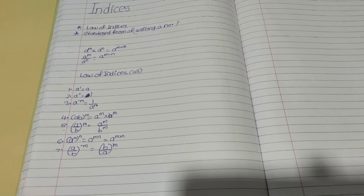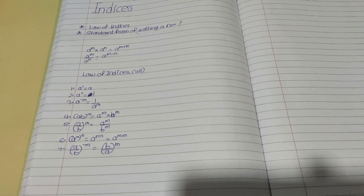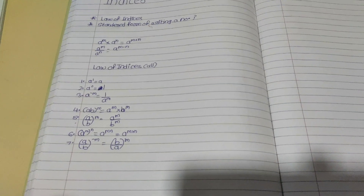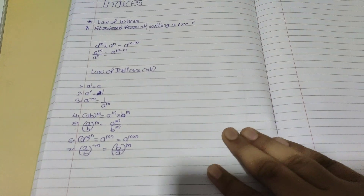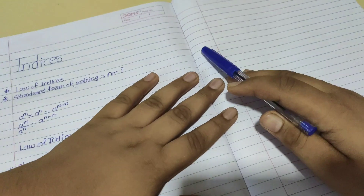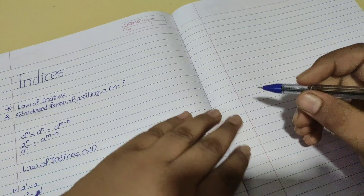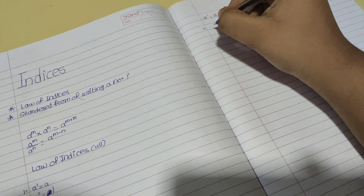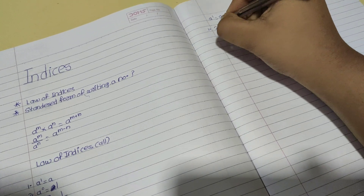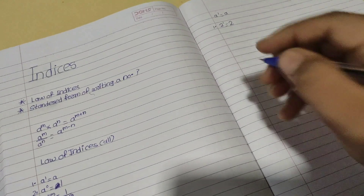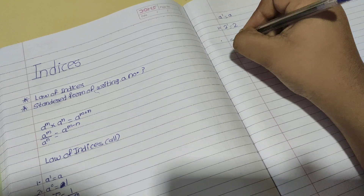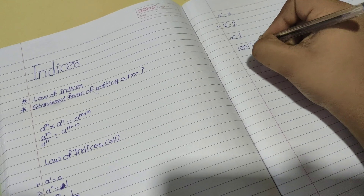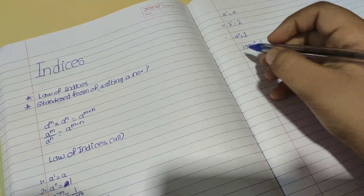The seventh and last: if a upon b in brackets is raised to negative m, then you can take the reciprocal and make the index positive. Now let's do some examples. The first: 2 raised to the power of 1 equals 2. The second example: something like 100,000 raised to the power of 0 is equal to 1.